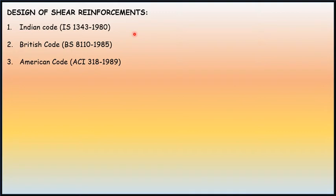Design of shear reinforcements: worldwide they have their own codes of the continent, such as the Indian continent, British continent, European continent, American continent, and Canadian continent. Different shear reinforcement designing codes are available. In this video I'll discuss the Indian code and British code. The American code I am not discussing. Indian code IS 1343-1980, British Code BS 8110-1985, American Code ACI 318-1989.